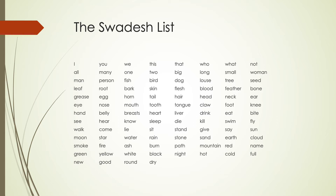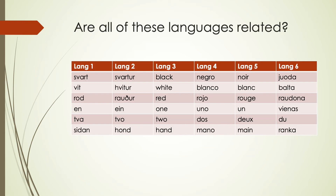Now let's look at an example of several different languages — six different languages. You can pause the video if you'd like, and take a moment to look and try to determine if you can see any similarities between some of these languages, if any of them are related to each other very obviously or maybe slightly less obviously, but with some similarities.